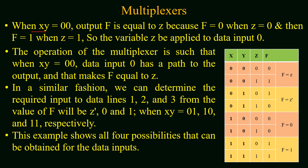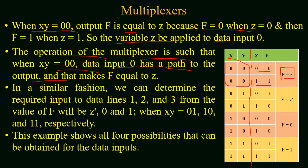We will determine the values of data inputs for the 4-to-1 line multiplexer as an actual implementation of the boolean function. The table is divided into two portions: the first has x and y corresponding to the select lines, and the second develops a relation for the value of the function for each combination of select lines. For instance, if x and y both equal zero then the function equals z, because when z equals 0 the function is 0 and when z equals 1 the function is also 1. So z is applied to data input 0. When x and y are both zero, data input 0 has a path to the output making f equal to z.